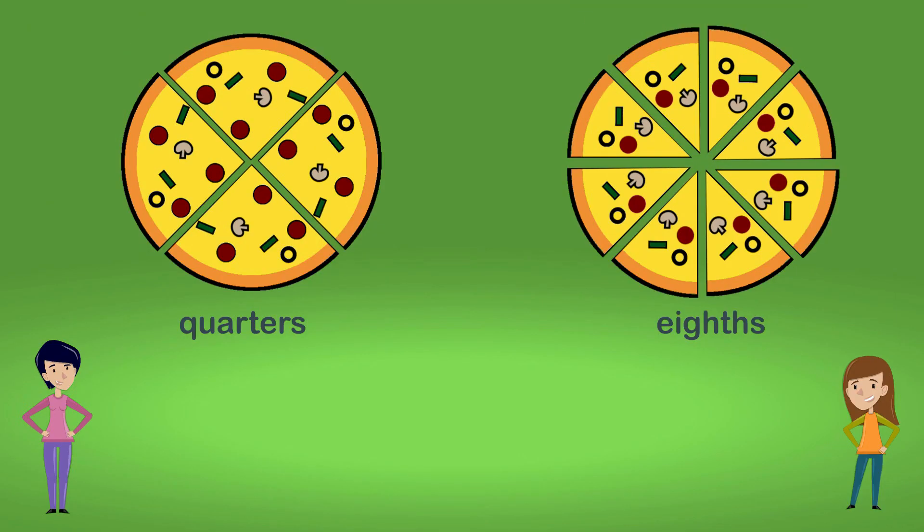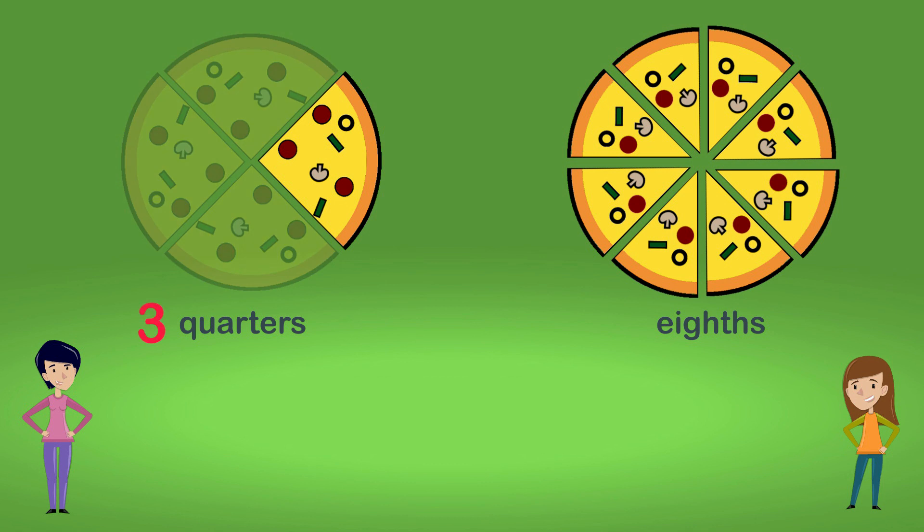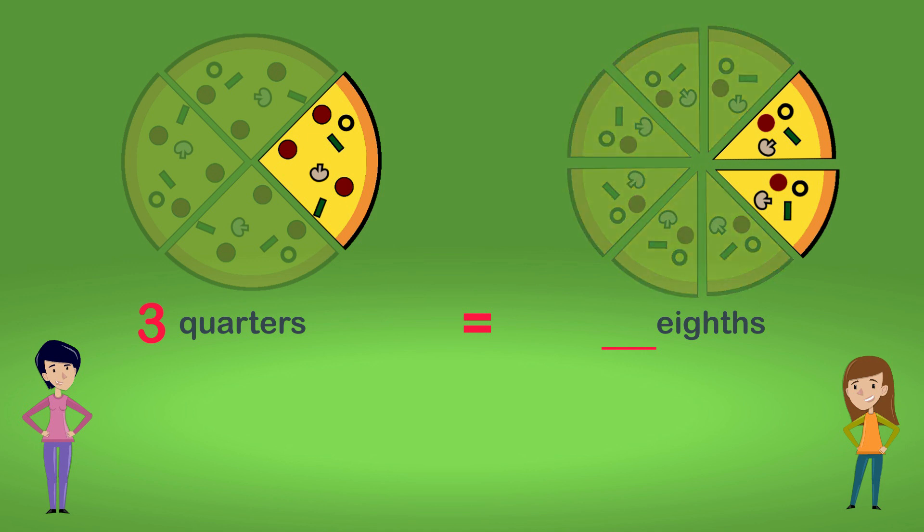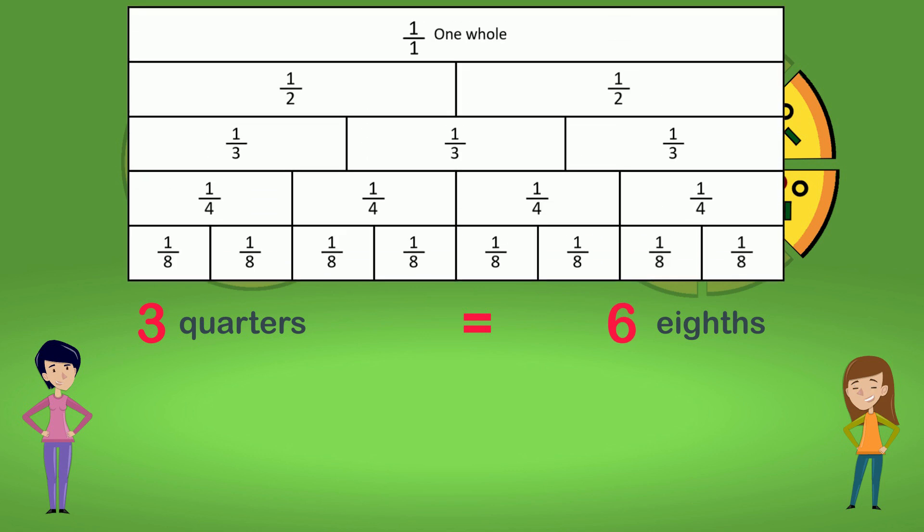Now let's imagine Sam ate three of her quarters. How many eighths would Lily have to eat to have eaten an equivalent amount? Six pieces. Three quarters is equivalent to six eighths. We can check this on the fraction wall.